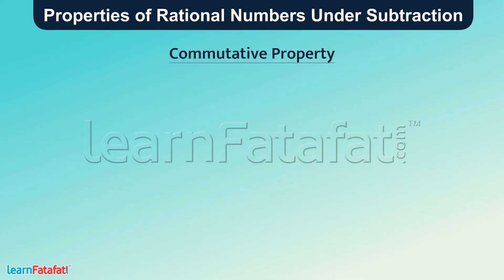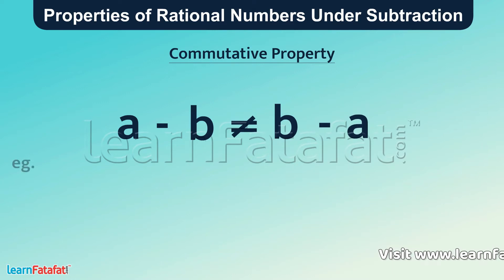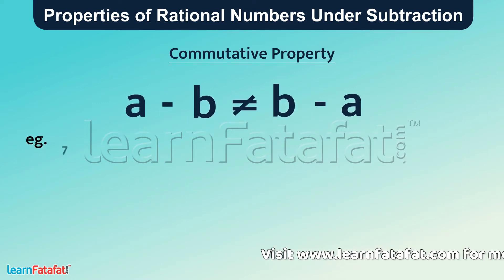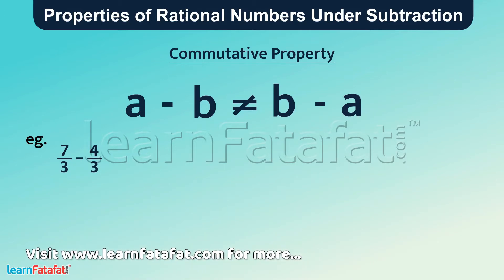Commutative Property: Rational numbers a and b cannot be subtracted in any order. a minus b is not equal to b minus a. For example, 7 by 3 minus 4 by 3 solving this in given order results in 3 by 3...